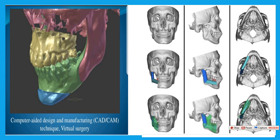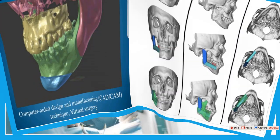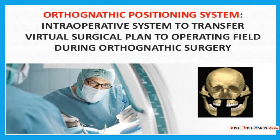Treatment planning on the computer provides more information about the anatomical area, calculates the safest point for cutting, and makes treatment more comfortable for both patient and surgeon. The patient can also see themselves on the computer before surgery in the operating room, and all information can be sent to the operating room by data. This is virtual surgery by orthognathic positioning system — this system sends all information to the operating room, guides the surgeon to the correct and safest anatomical position, with a higher success rate, more comfort, and faster treatment.